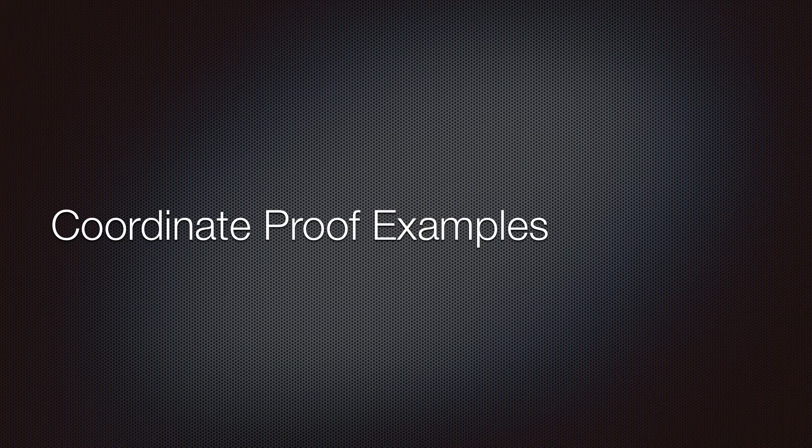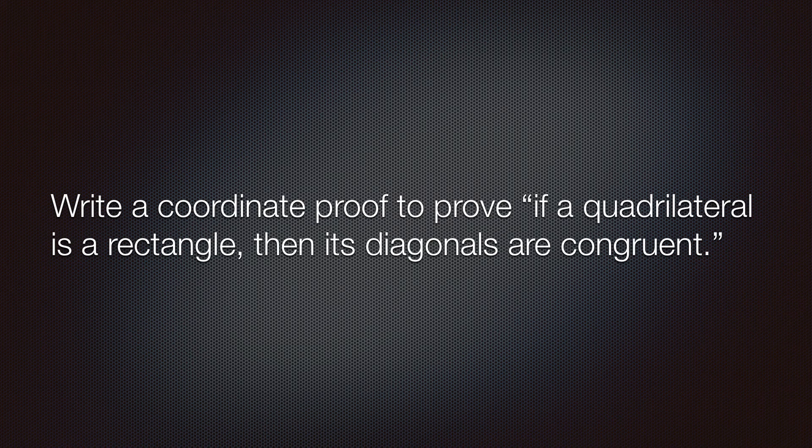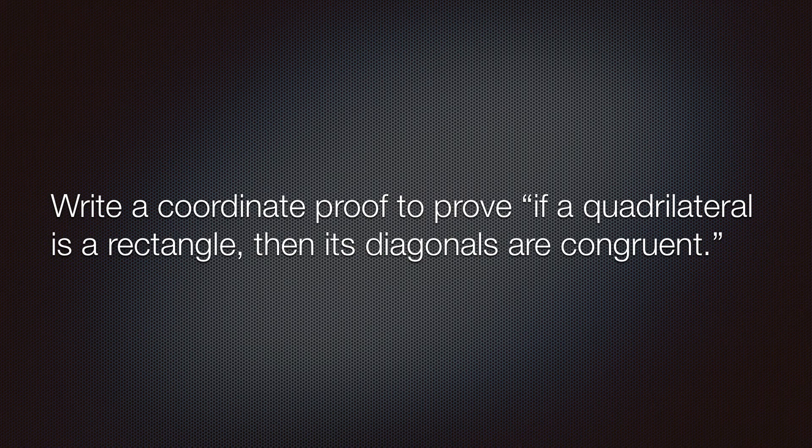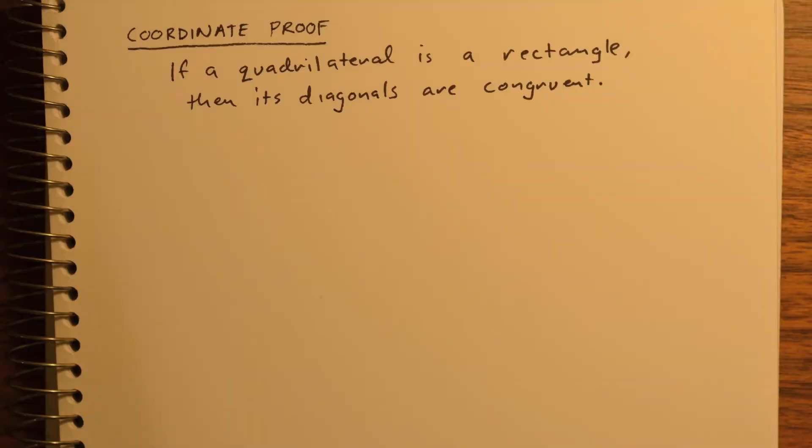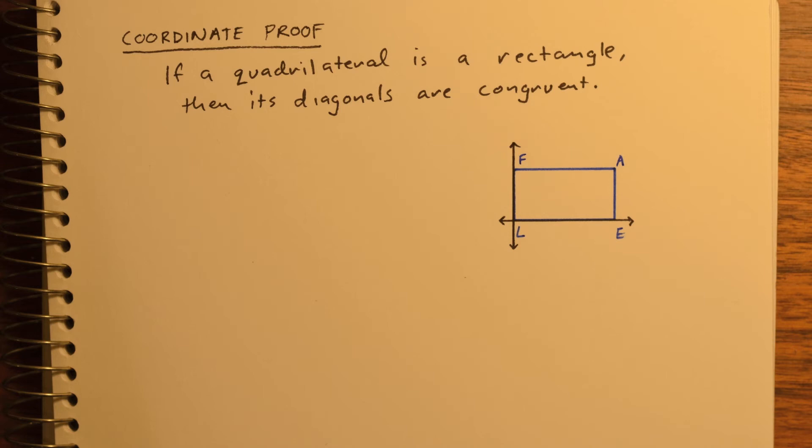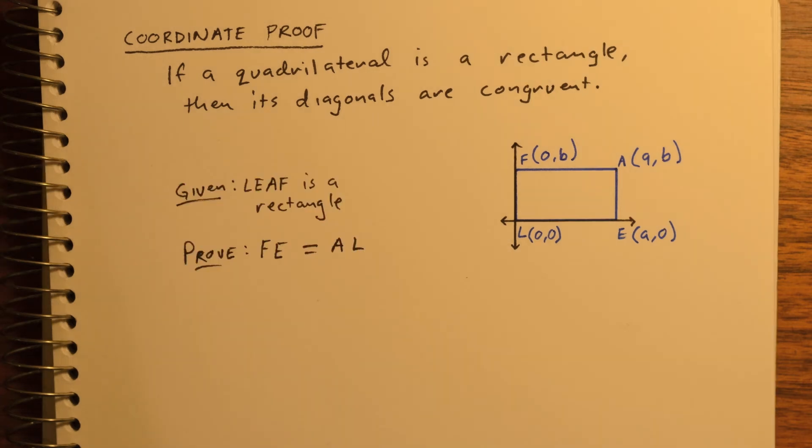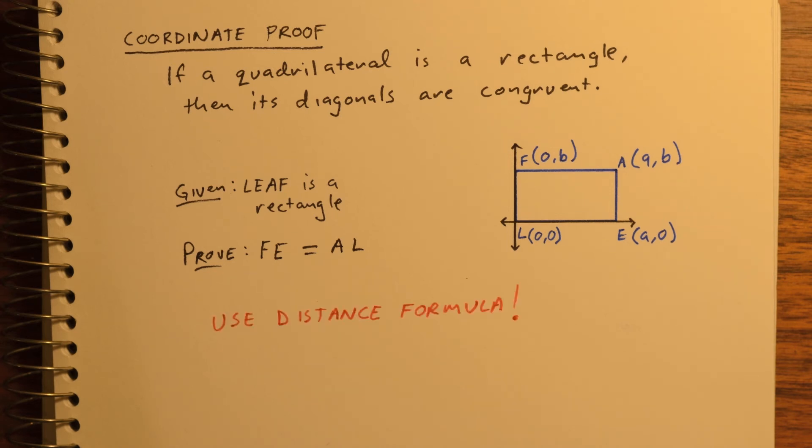Let's take a look at just one coordinate proof example. We're going to prove that if we have a quadrilateral that's a rectangle, its diagonals must be congruent. So, first, we have to position and label a rectangle on a set of XY axes. Let's call it LEAF. So, here's one possible set of coordinates for LEAF. We're given that it's a rectangle, and we want to prove that its diagonals are equal in length, which means they would be congruent. So, we'll just use the distance formula.